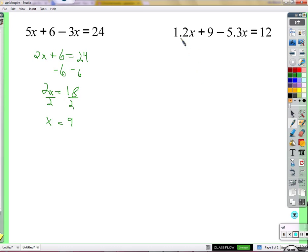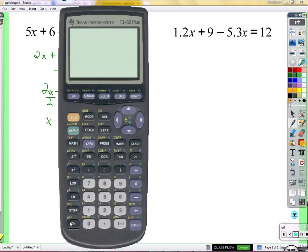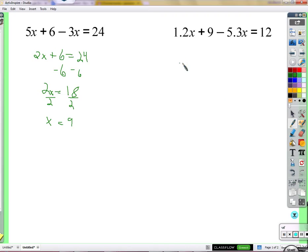In this example, we have 1.2x minus 5.3x. And if we take 1.2x minus 5.3x, we get a negative 4.1x. Still plus 9, still equals 12.